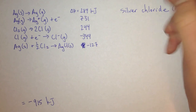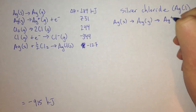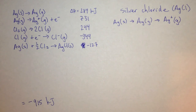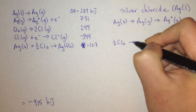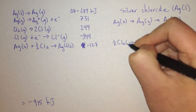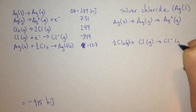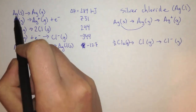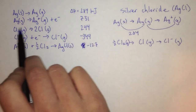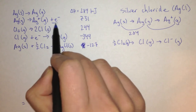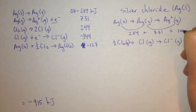First, we have to take the silver, which is solid at room temperature, make it a gas by evaporating it, and take away one of its electrons. When we're evaporating the silver, that's 284 kilojoules. When we're taking away its electron, so we end up with an electron, that's 731 kilojoules. The sum of those is 1015 kilojoules.